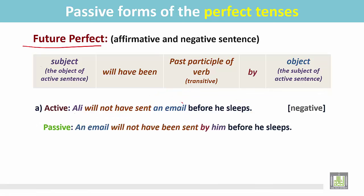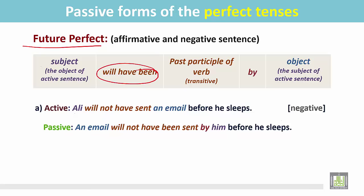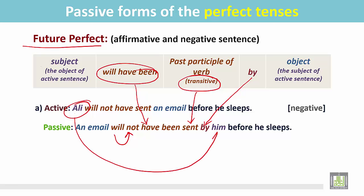In the passive sentence, the object of the active sentence becomes the subject. 'An email' is the subject here in the passive form. Then for the future perfect we use 'will have been,' but since it is negative, we use 'not' just after 'will' — 'will not have been' — followed by the past participle form of the transitive verb, 'sent,' then 'by.'